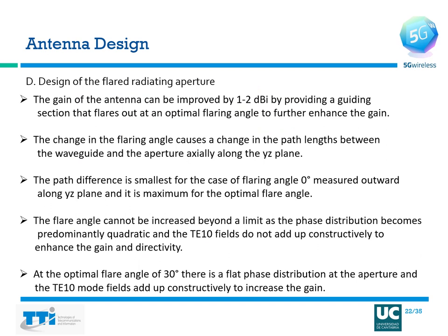The last step of antenna design is the design of the flared radiating aperture. The gain of the antenna can be improved by 1 to 2 dBi by providing a guiding section that flares out at an optimal flaring angle. The change in flaring angle causes a change in the path length between the waveguide and the aperture axially along the visor plane. The flare angle cannot be increased beyond a limit, as the phase distribution becomes predominantly quadratic and the TE10 fields do not add up constructively. At the optimal flare angle of 30 degrees, there is a flat phase distribution at the aperture and the TE10 mode fields add up constructively to increase the gain.